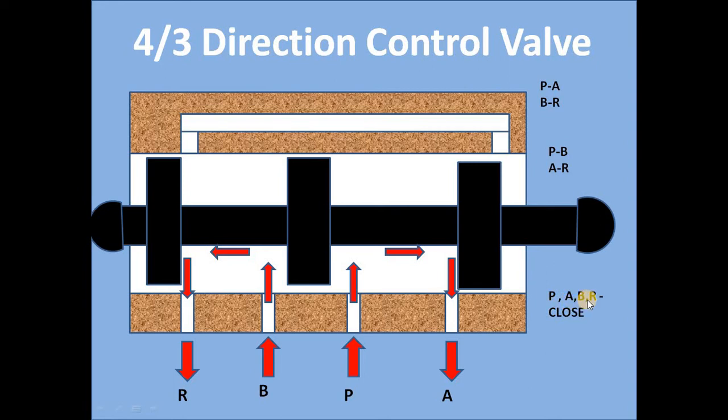So now we will move towards Animation. In this position, this is your first position. Oil goes from P to A and B to R. See, oil comes from pump port to the cylinder direction of our valve body and then it goes towards A port. B port is your actuator port. Oil from the actuator is coming from B and going to your reservoir port. So let's see the animation.